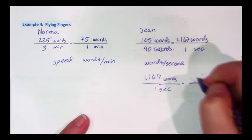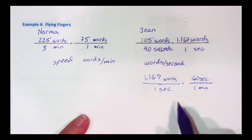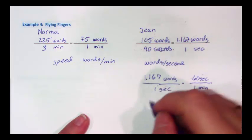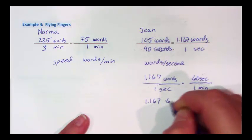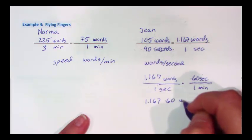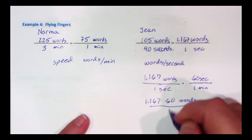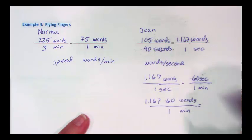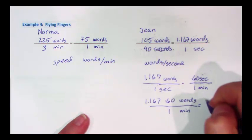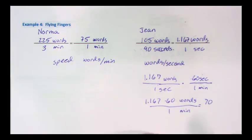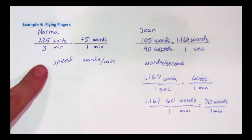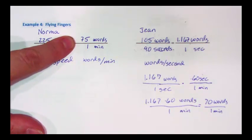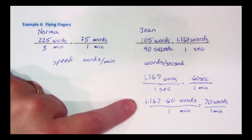I know that there are 60 seconds in one minute. So when I multiply those together, my rate should give me words per minute. And that is going to be 70 words in one minute. And I can see that Norma is the winner here. She can type 75 words in one minute. And Jean can type 70 words in one minute.